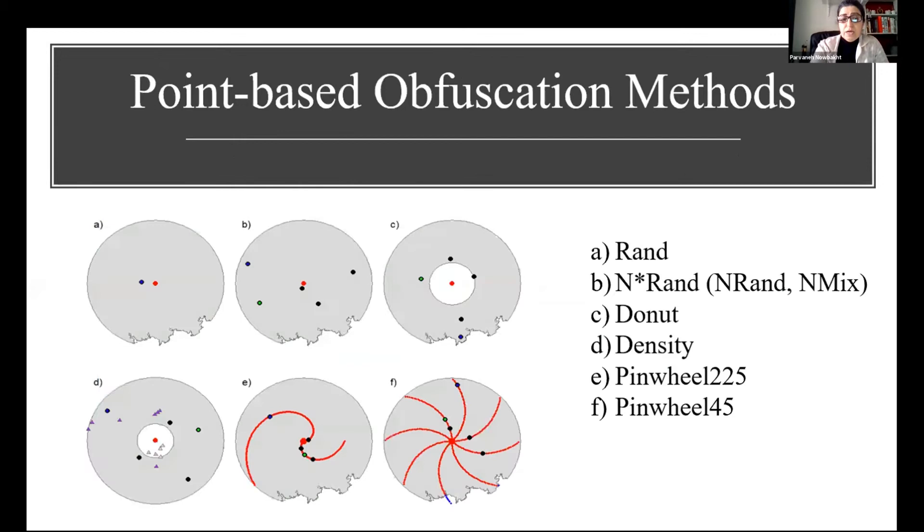Randomization refers to transferring original points to a random point or farthest or middle point among n random points inside the obfuscation area. The obfuscation area could be a buffer, donut shape, or pinwheel shape. The k-anonymity refers to ensuring that the obfuscation method contains at least k minus 1 other locations.